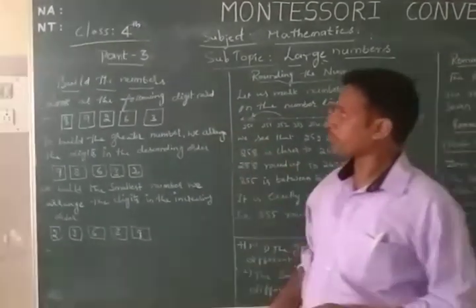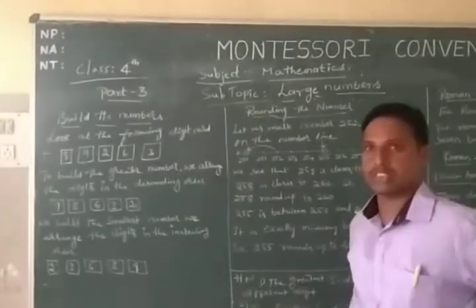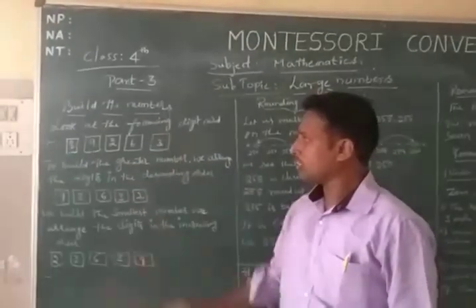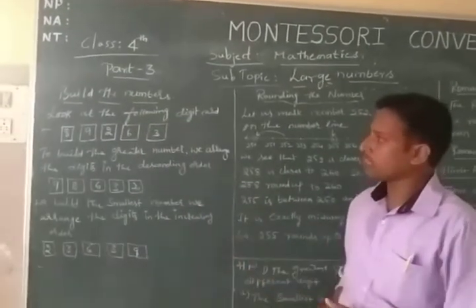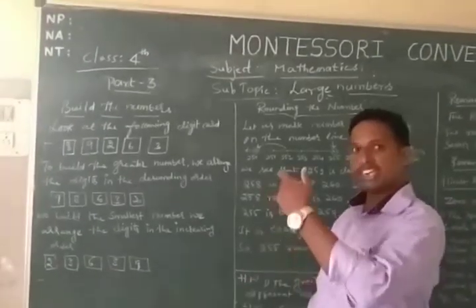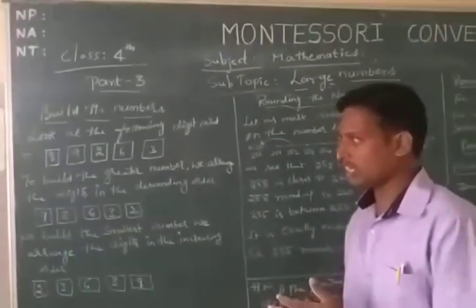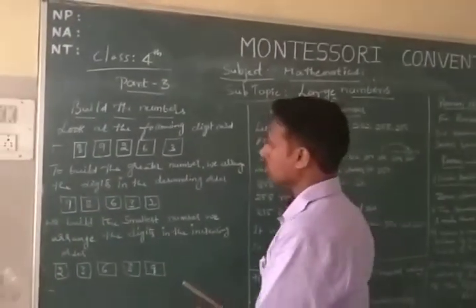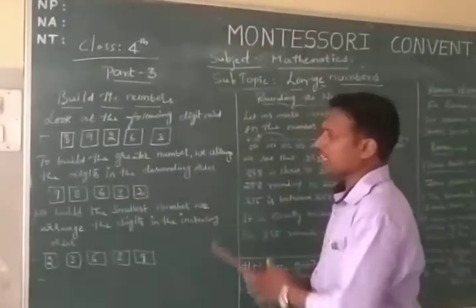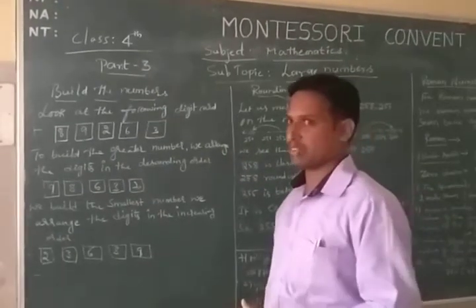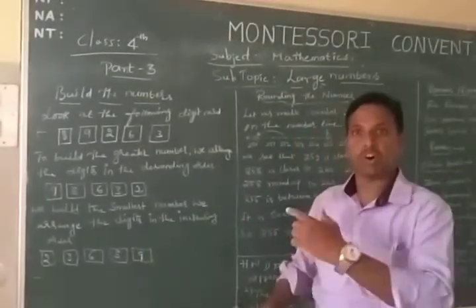Now, build the numbers. Look at the following digit cards. We arrange the greatest number to smallest number — that is descending order. To build the greater number, we arrange the digits in the descending order. What is descending order? The greatest number to smallest number.